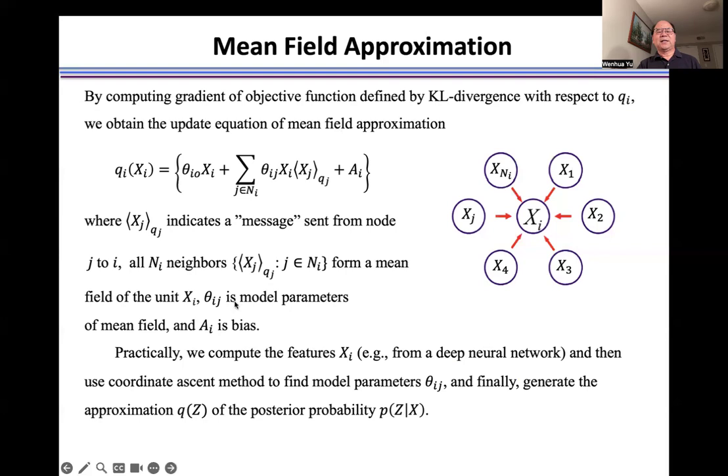θ_ij is the model parameters of mean field and A_i is bias. Practically, we compute the features X_i, for example, from a deep neural network, and then use coordinate ascent method to find the model parameters θ_ij, and finally generate the approximation q(Z) of the posterior probability p(Z|X).